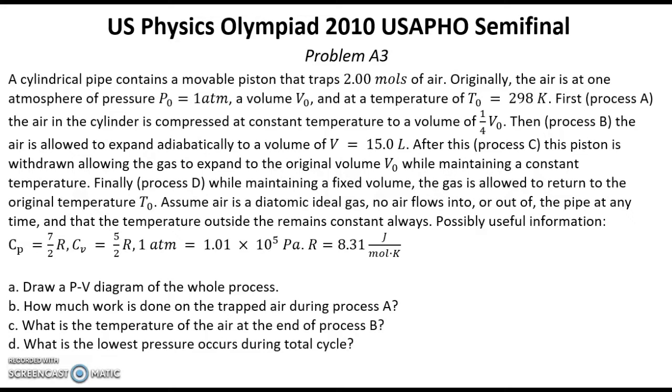A cylindrical pipe contains a movable piston that traps two moles of air. Originally the air is at one atmosphere of pressure P0, a volume V0, and at a temperature of T0 equal to 298 Kelvin. First, process A: the air in the cylinder is compressed at constant temperature to a volume of one quarter V0.